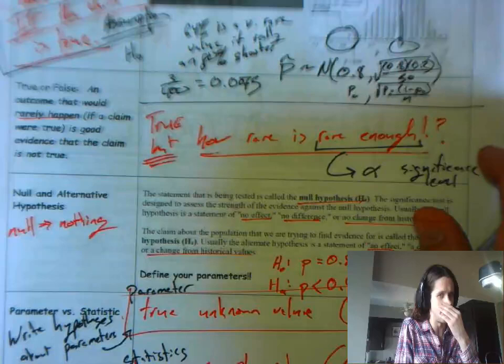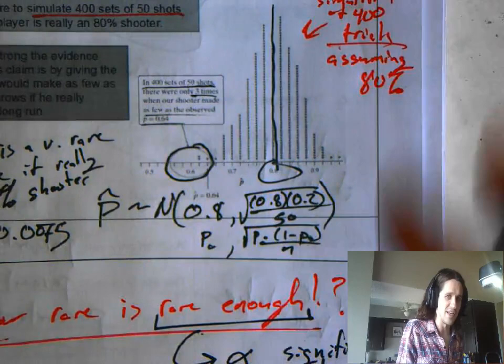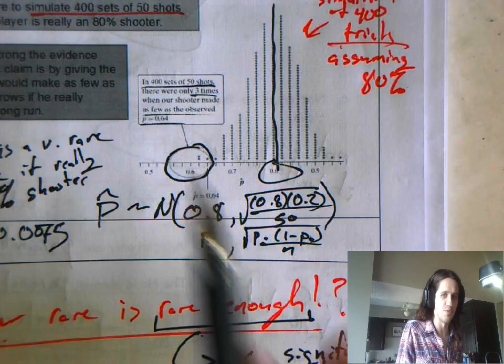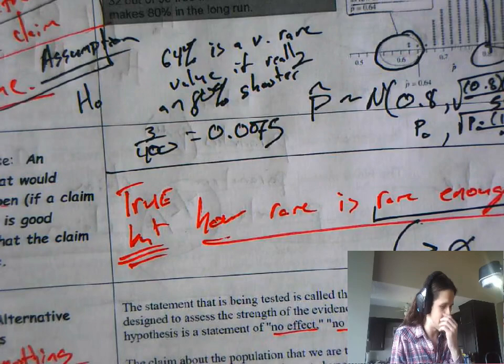And we did a little simulation and we said, all right, if you're really an 80% shooter, if we let an 80% shooter go and do this 400 times, they'd only do this bad or worse three out of those 400 times. That's pretty rare, that's an uncommon result.